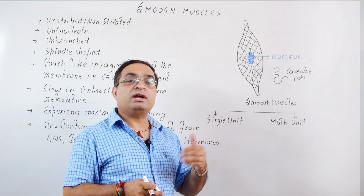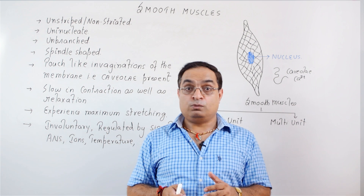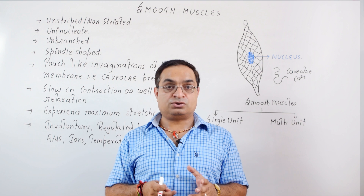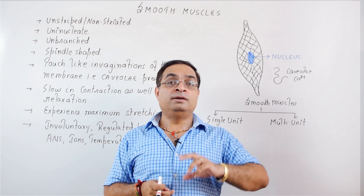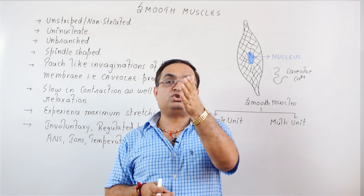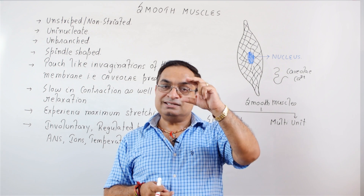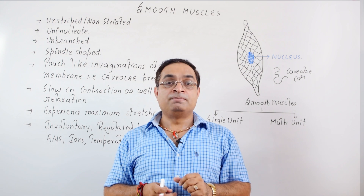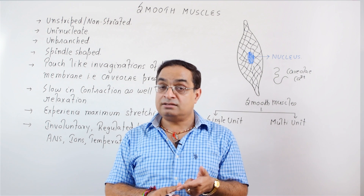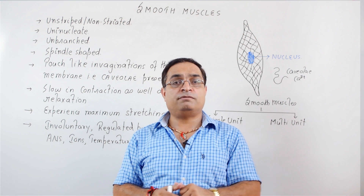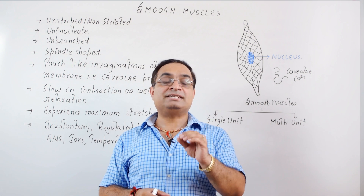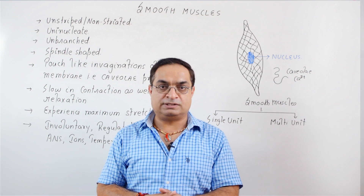Smooth muscles also contract in response to stretching — for example, the wall of the afferent arteriole stretches in response to changes in blood pressure and the muscles contract. So stretching is one factor, hormones is another factor, ions is another factor, and one very important factor is temperature. Smooth muscle fibers contract and relax in response to temperature as well.